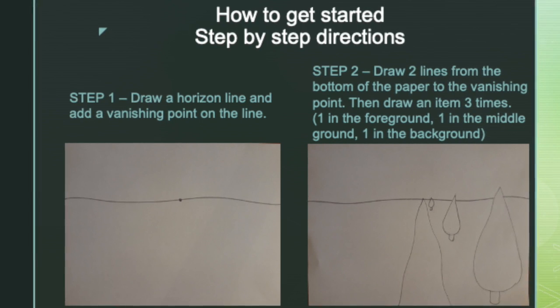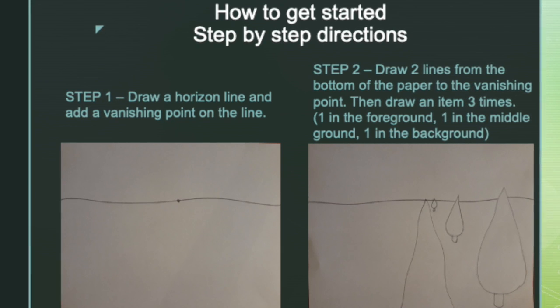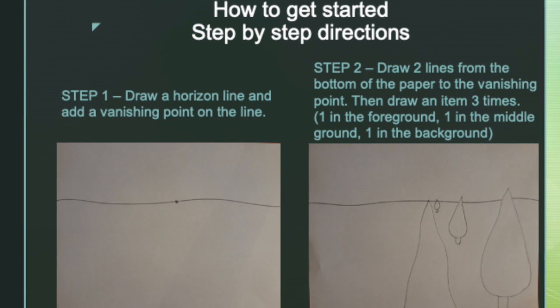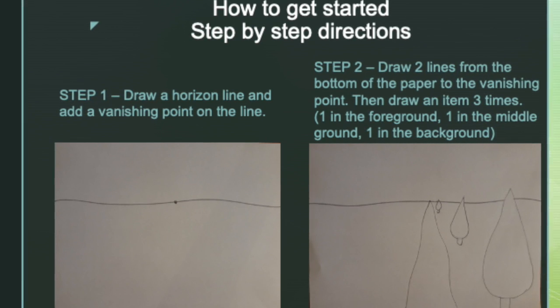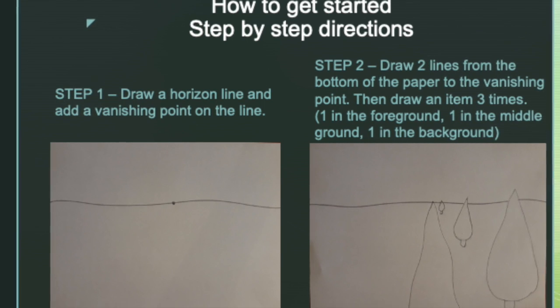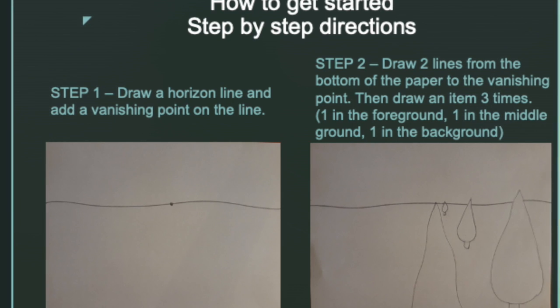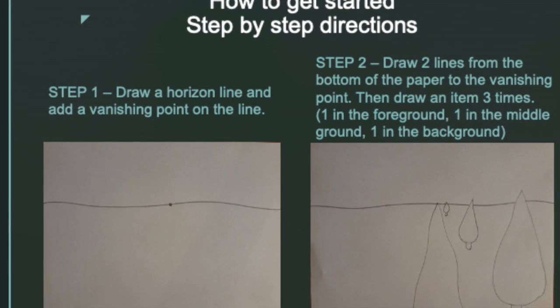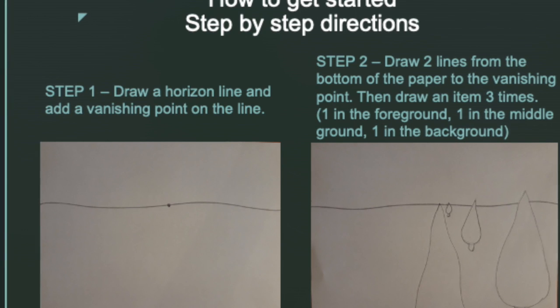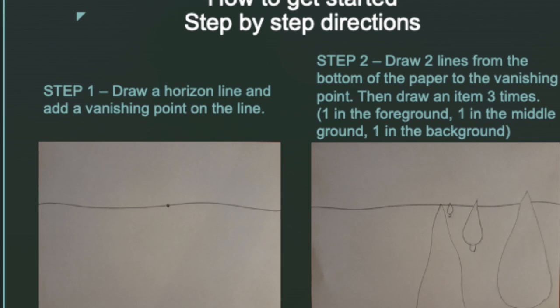Then you are going to draw a road, stream, river, or railroad tracks by starting with two lines at the bottom of the page and drawing them to meet at that point. Then you are going to choose one item to draw three times next to your road: a large item in the foreground, a medium-sized item in the middle ground, and a small item in the background.